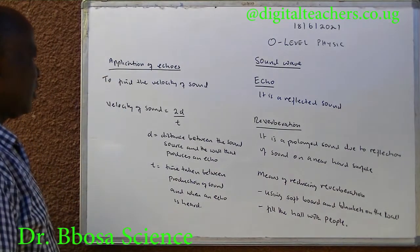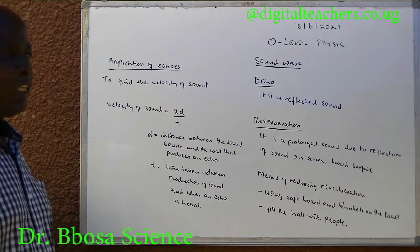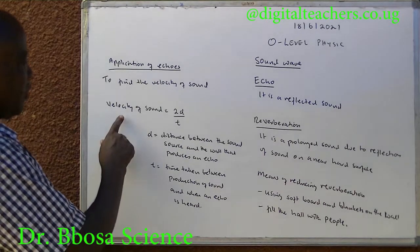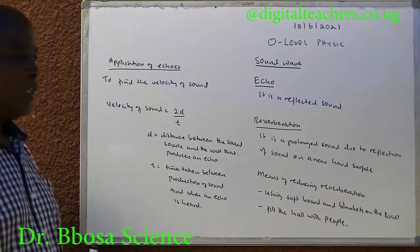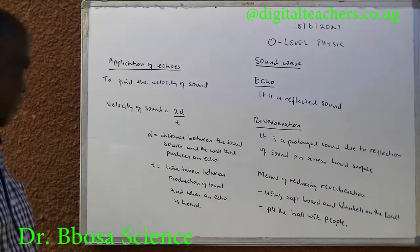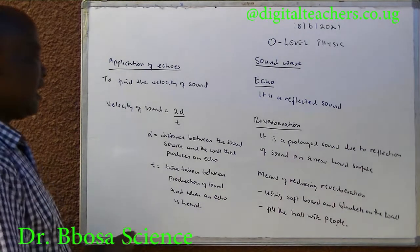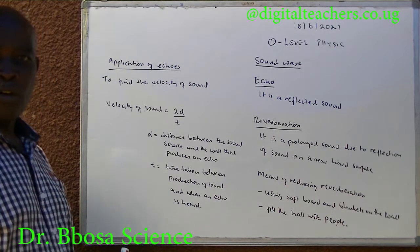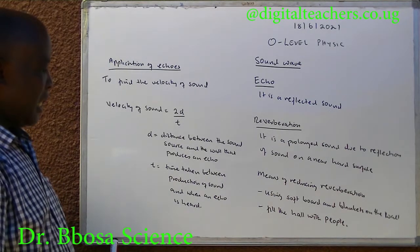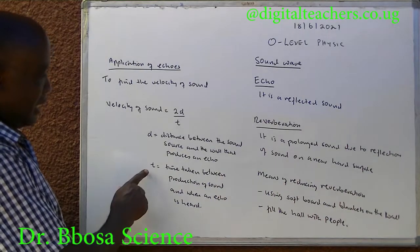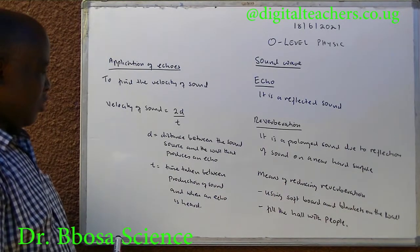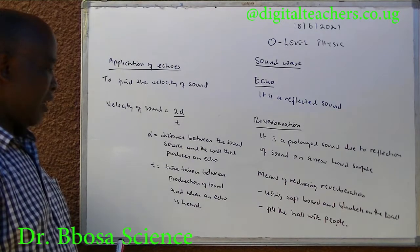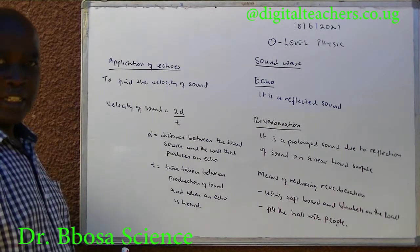Application of echoes: to find the velocity of sound. Velocity of sound is equal to 2D over T, where D is the distance between the sound source and the wall that produces an echo, and T is the time between the production of sound and when the echo is heard.